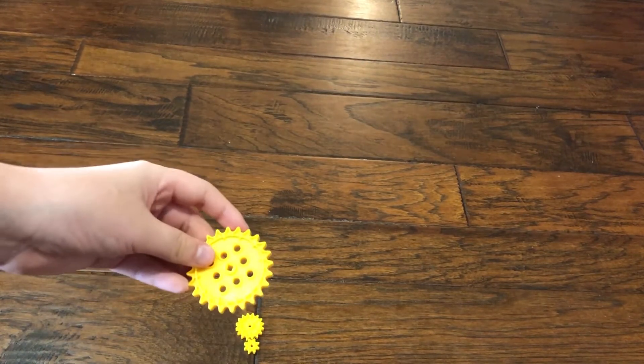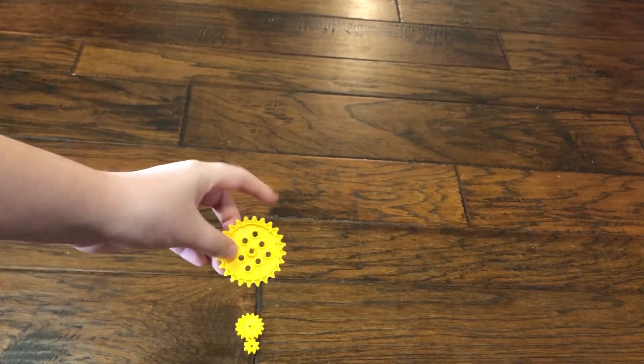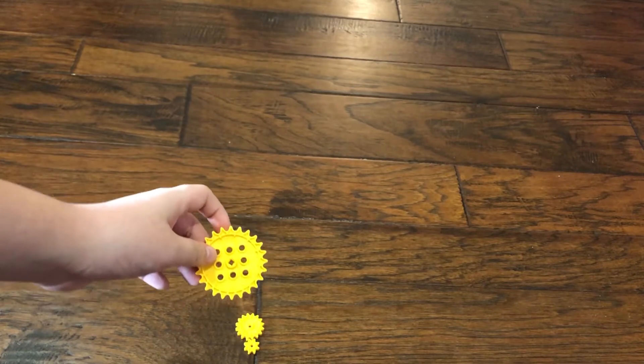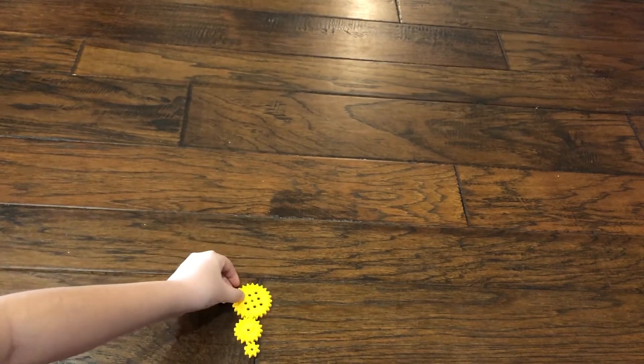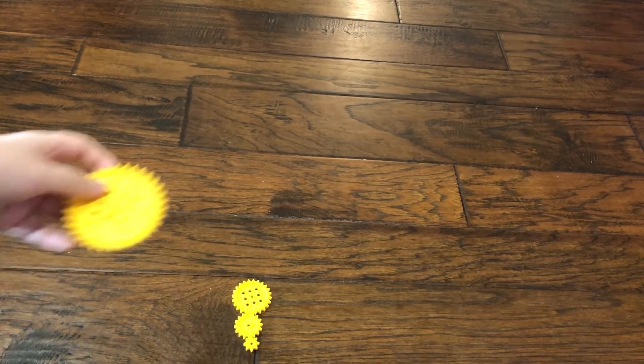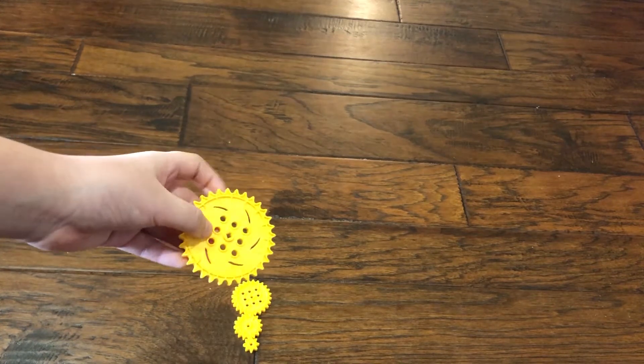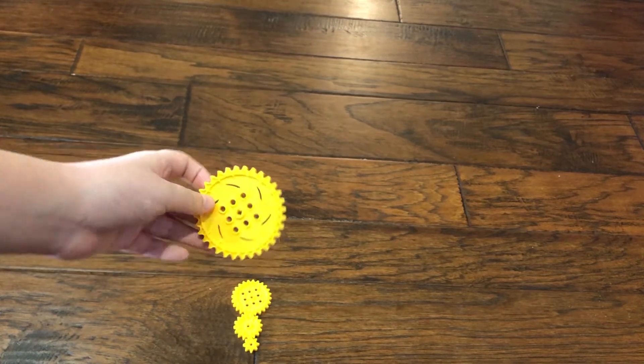This is the 24-tooth sprocket. It has some more holes. You can attach things that you want to on here. A 30-tooth sprocket. A 32-tooth sprocket. It has some little lines across like this.